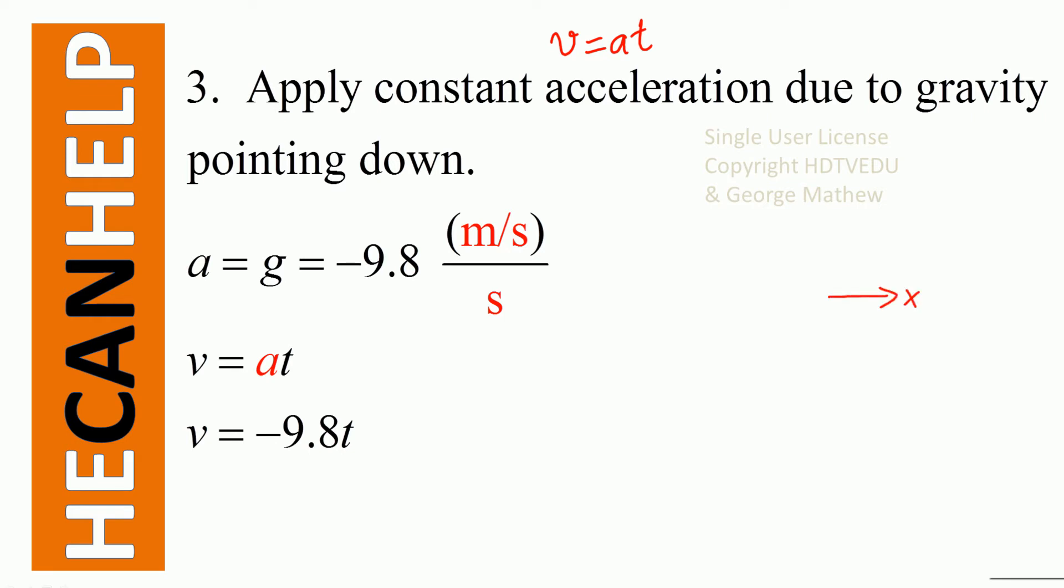We have acceleration on the vertical equals negative 9.8 meters per second per second. Don't forget, positive x horizontally to the right, negative y vertically down. So your acceleration is negative 9.8 meters per second per second. So substitute that as well.